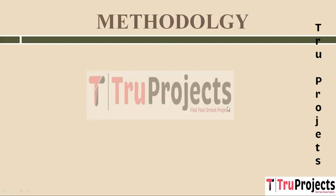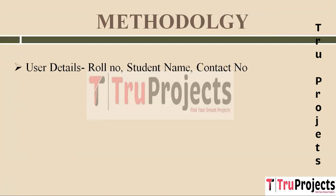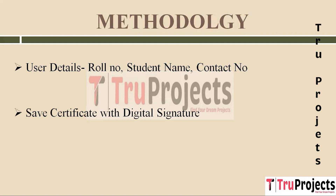To execute this project we have designed a few modules. The first module is User Details, which collects and stores essential details of the student including their role number, name, and contact number, used to uniquely identify the student. The second module is Save Certificate with Digital Signature, where an admin user uploads a student's academic certificate. The uploaded certificate is converted into a digital signature using the certificate's content and a secret key. Once the digital signature is generated, it is stored along with the student's details in the blockchain database.